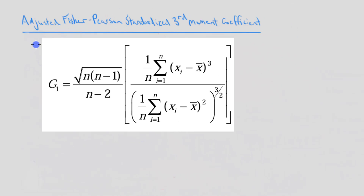If you're calculating skew using software like Excel, Minitab, or SPSS, then this is the formula you're going to be seeing: the adjusted Fisher-Pearson standardized third moment coefficient for skew. This has a very long name, but each part is telling us exactly what the equation is doing. Named after Ronald Fisher and Carl Pearson, what we're doing is finding the standardized third moment and then adjusting it based on our sample size.